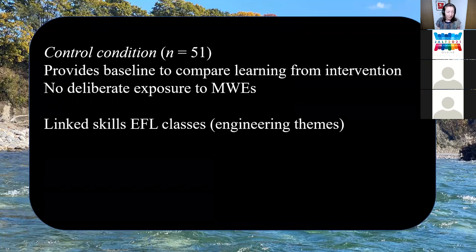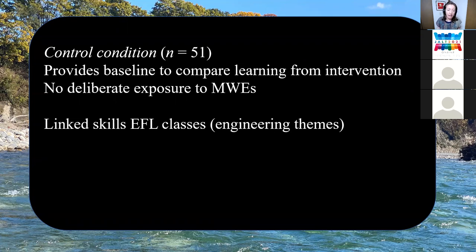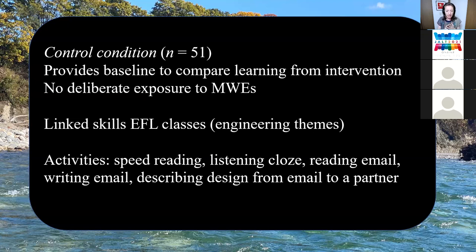The control condition students provided a baseline to compare learning from the intervention. They didn't have any deliberate exposure to the multi-word expressions being explicitly taught in the experimental group — though they did have some exposure in the pre-test. During actual classroom time, they didn't have that. The control condition followed a linked skills syllabus. My students were all engineering majors, so activities included speed reading, listening and filling in missing words, reading an email, writing an email, and describing a design from an email to a partner. The idea with linked skills is that you use similar vocabulary throughout different skills of reading, writing, speaking, and listening, which builds a certain amount of fluency through repetition.